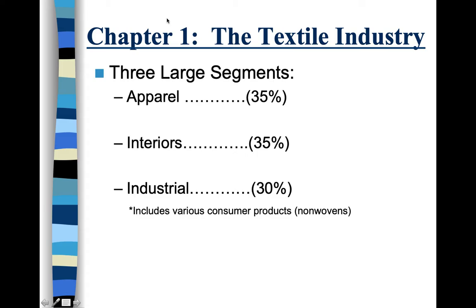Chapter One discusses the textile industry broken down into three large segments: apparel makes up about 35% of the industry, interiors or home goods make up another 35%, and industrial textiles are about 30% of the industry. Apparel and interiors together make up 70% of the textile industry, so they're very important. Industrial applications matter too, but the focus is really on apparel and interiors.